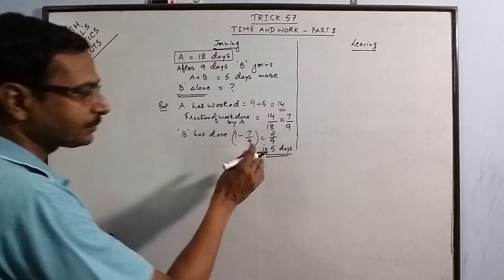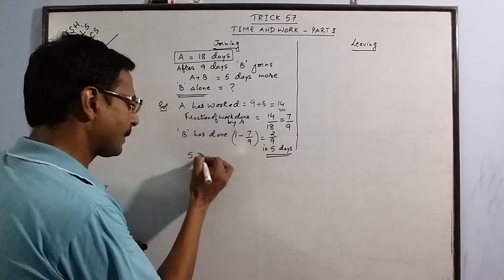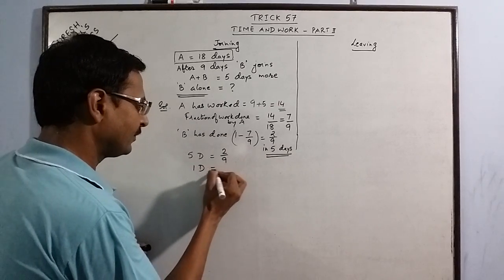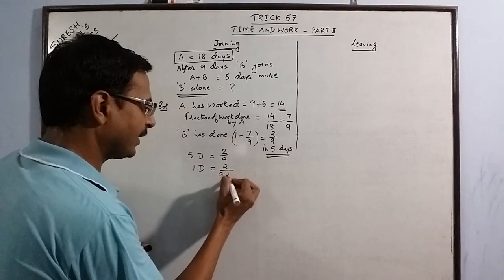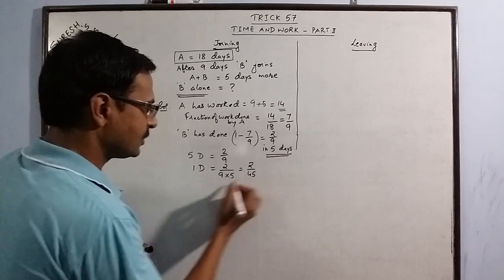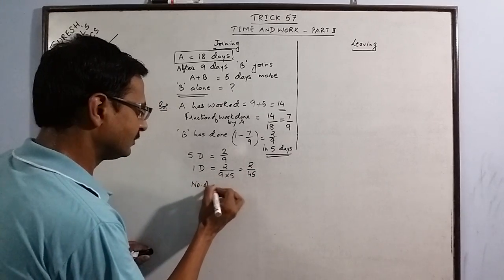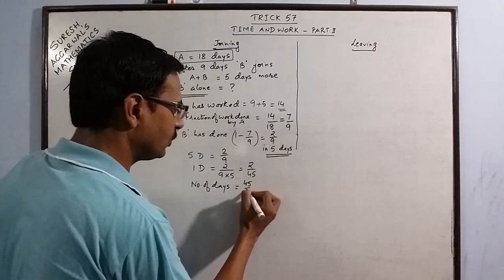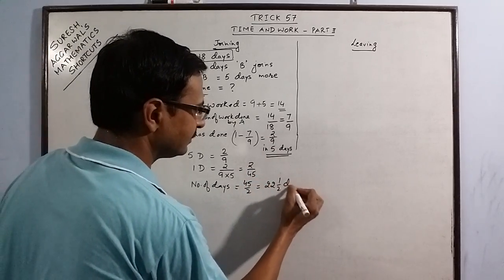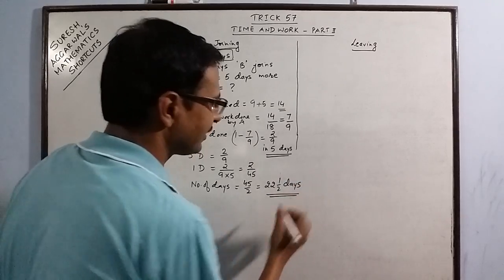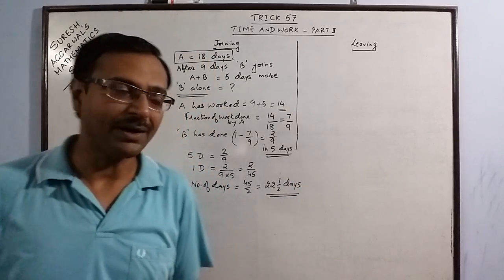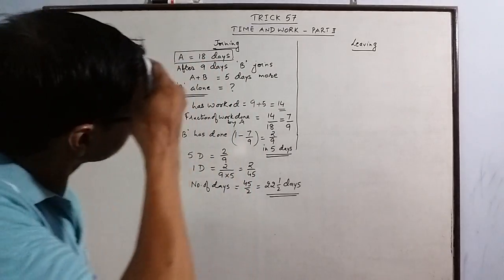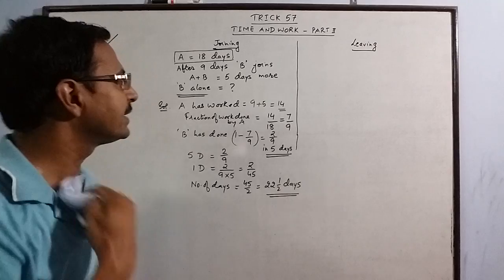The third step gives us the required result. Since 5 days equals 2/9 of the work, then 1 day equals 2/45 of the work. To find the total number of days B takes alone, just take the reciprocal: 45/2, which is 22.5 days. So B alone would take 22 and a half days to complete the task. Three basic steps and we arrive at the result.